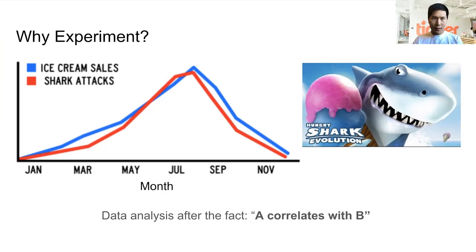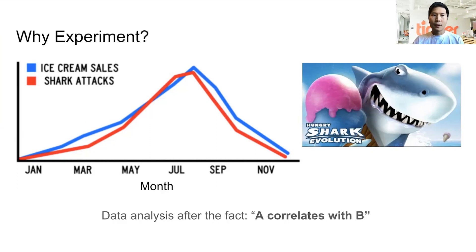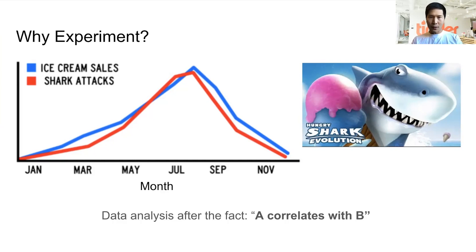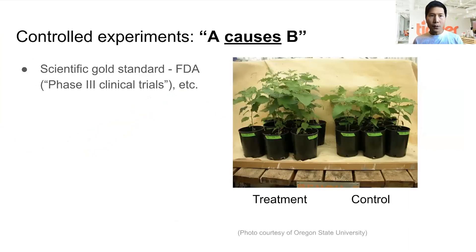It's not so much that ice cream is causing sharks to attack. Rather, they correlate because people tend to go in the water where the sharks are, and they tend to eat ice cream both in the summer. You may have heard the phrase: correlation does not necessarily imply causation. Data analysis tells you something like A correlates with B. Controlled experiments, on the other hand, tell you that A causes B.